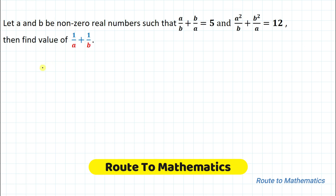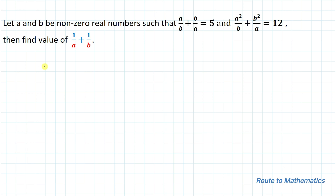Hello everyone, welcome to Root2Mathematics. Today in this video I am going to solve this interesting algebraic question. The given question is: let a and b be non-zero real numbers such that a/b + b/a equals 5, and a²/b + b²/a equals 12. Then find the value of 1/a + 1/b. We have two equations with variables a and b and we are asked to find the sum of reciprocals of a and b.